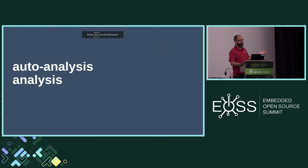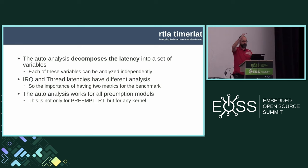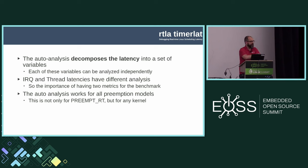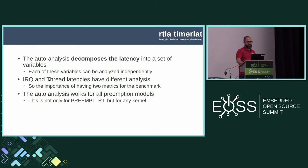The auto-analysis output is where we started looking at what is the root cause for a bad latency value. It tries to decompose the latency into a set of variables, which can be analyzed more or less independently. This is based on research I presented in 2020 at the ECRTS conference and at Plumbers. There is background for these variables and why they are independent. The auto-analysis prints parts for the IRQ and parts for the thread, and it works for both the preempt_RT and non-preempt_RT kernel.